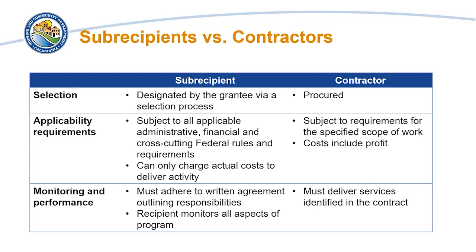Contractors, on the other hand, must be procured. They are subject to requirements based on the specified scope of work. Their costs may include a profit, and they must deliver services identified in the contract. The main differences between subrecipients and contractors come into play in three areas: first, the process by which they are selected and awarded CDBG-CV funds; second, the applicability of requirements passed down to each; and third, the monitoring and performance of each.